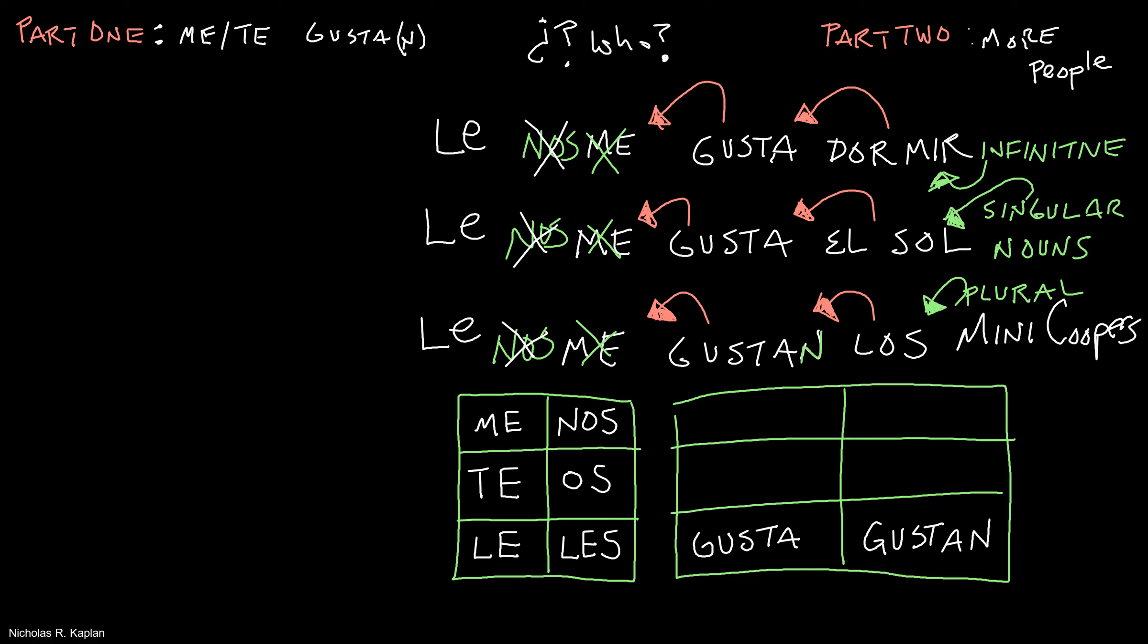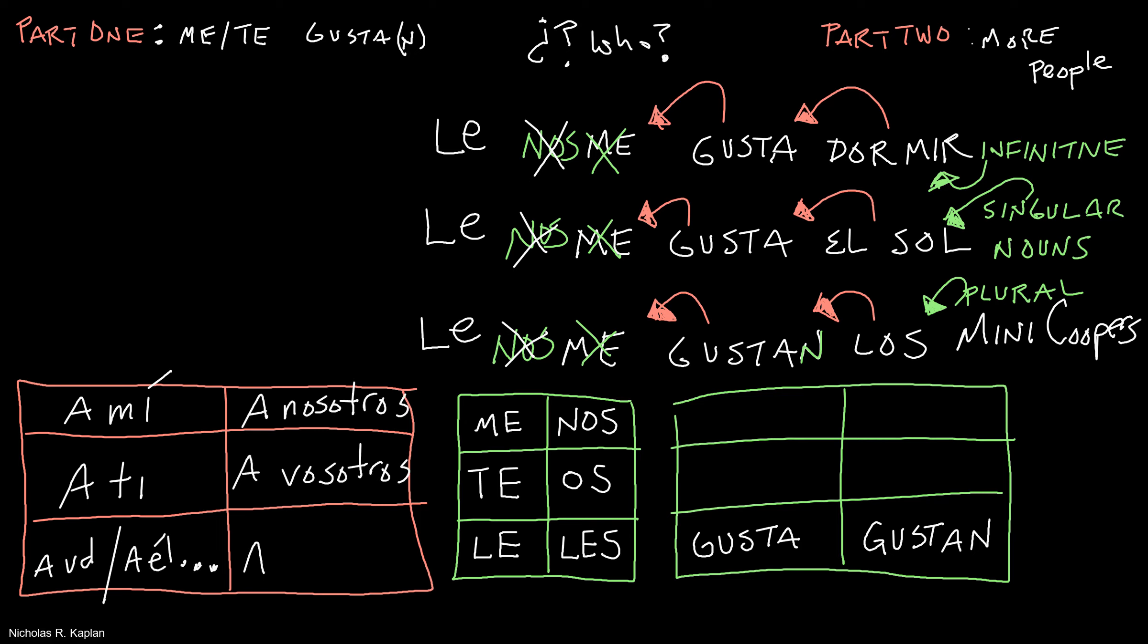To clarify or to add extra emphasis, we can add an additional part. So let's draw our box of 6 here. And we would say, a mí, a ti, a él, a ella, a Shakira, a usted, a nosotros, a vosotros, a ellos, a ellas, a ustedes.